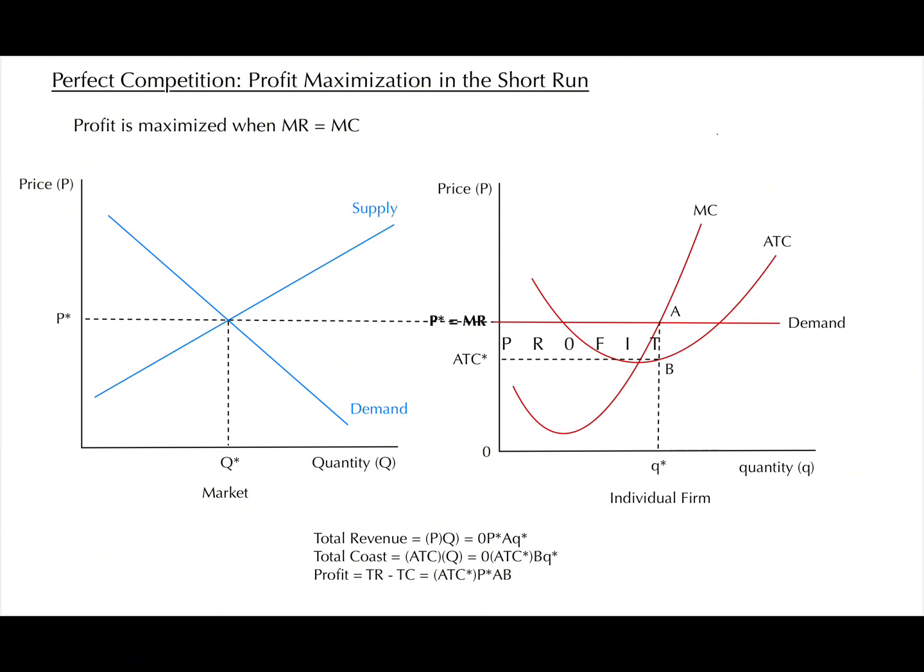And since we know that profit is maximized when marginal revenue equals marginal cost, we can find where the marginal revenue curve intersects the marginal cost curve. At this point, we can also find lowercase q star, which is the equilibrium quantity for the individual firm. We will call this point A.